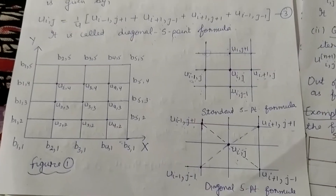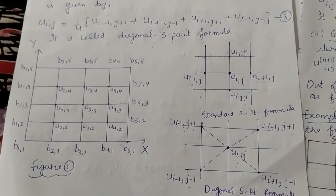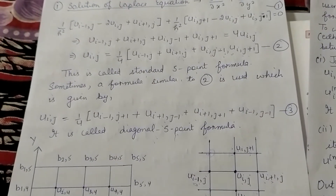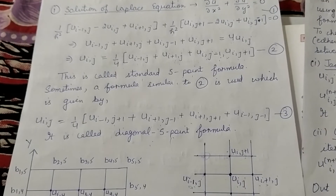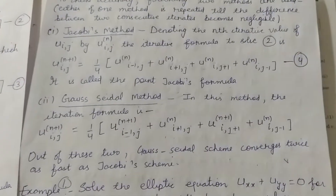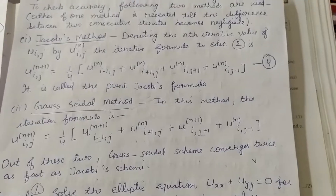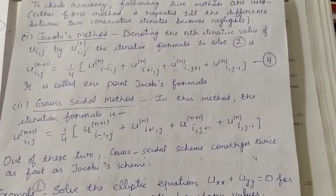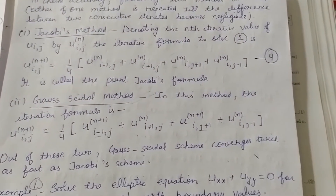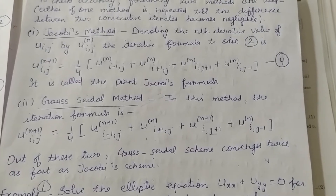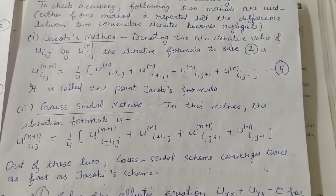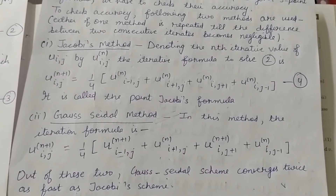This was the method to solve the Laplace equation. In the next lecture we will study an example in which we solve a Laplace equation using the standard five-point formula and diagonal five-point formula, and then check the accuracy of the mesh points using Jacobi's method and Gauss-Seidel method. Thank you, students.